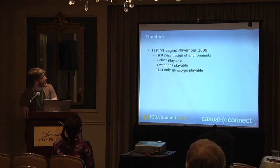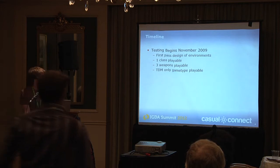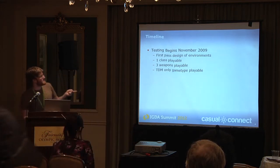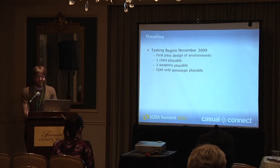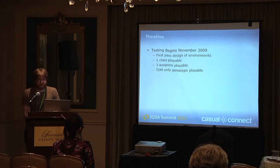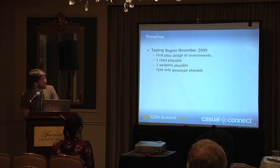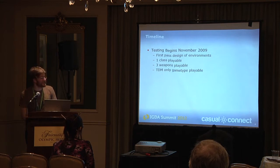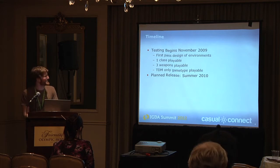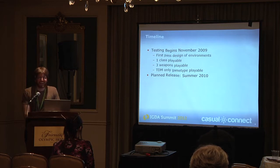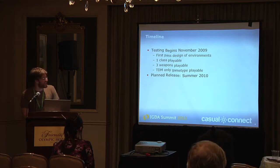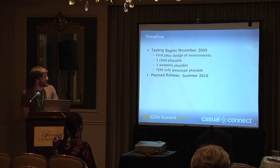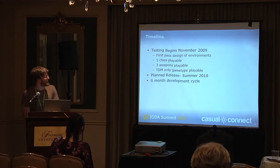Here's the timeline. Testing began in November 2009. At that time, they had a first pass on one environment, one playable class out of four, three weapons out of sixteen, and only one game type — TDM. The planned release was summer 2010, which was about six months away, leaving time for certification. It was an incredibly optimistic — probably crazy — timeline, but we had to do it.